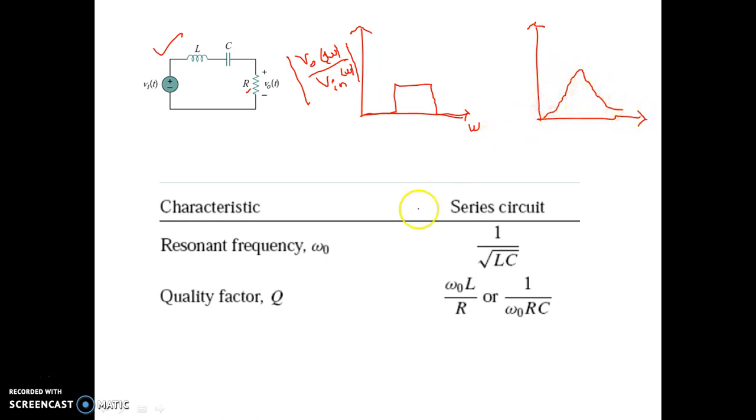This point when this is maximum is obviously the resonant frequency omega naught. One more thing: if the graph looks like this, that means if bandwidth is lesser, then the graph will be steeper or sharp and we will say that this graph has high quality factor. The black color graph has high quality factor. Basically, quality factor is nothing but to show how much a graph is steeper.